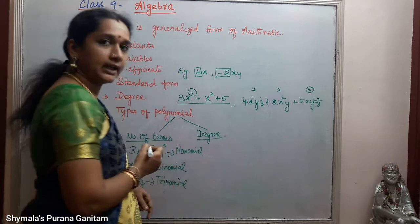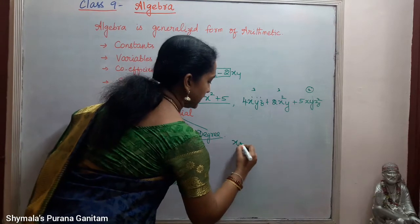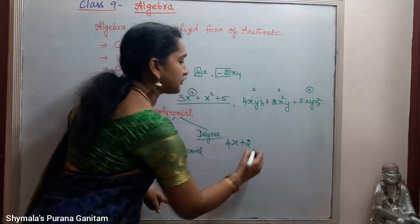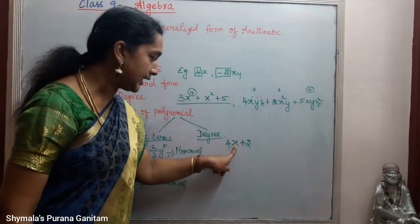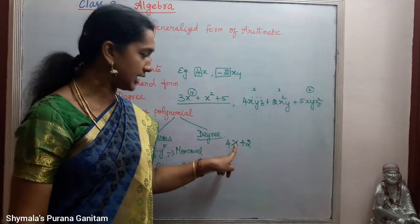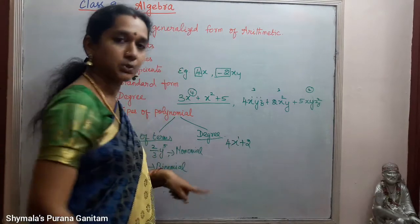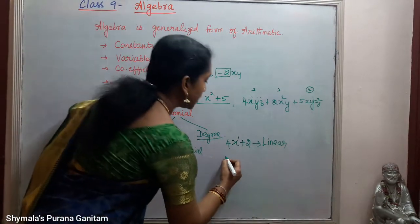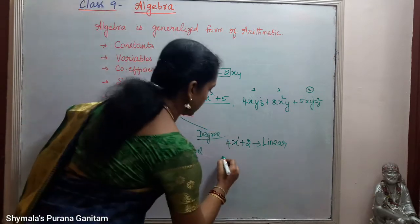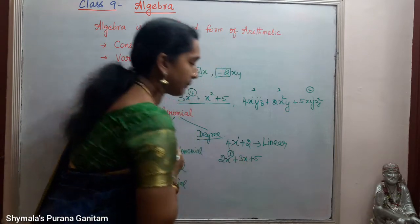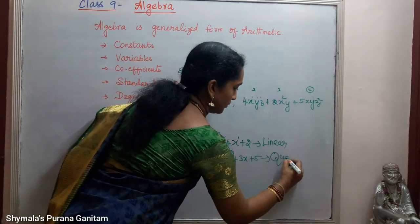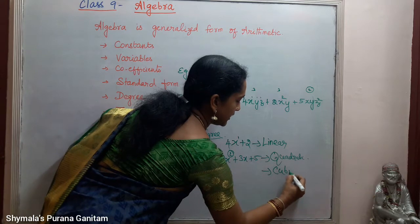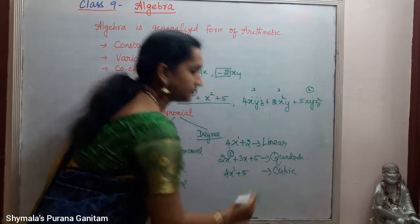Depending upon the degree, we can classify polynomials as: a linear polynomial — for example, 4x + 2, where the degree of the variable x is 1. A quadratic polynomial has degree 2 — for example, 2x² + 3x + 5. A cubic polynomial has degree 3. And a biquadratic polynomial has degree 4.